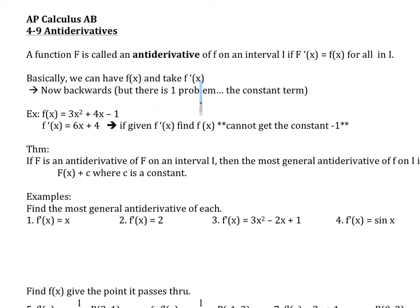Here's the problem: suppose f of x equals 3x squared plus 4x minus 1. If I take f prime of x, this becomes 6x plus 4 — notice the constant became zero. If I gave you 6x plus 4 and asked for the antiderivative, how do you get the constant term? You can't recover negative 1 unless you're given more information. That leads to our theorem.